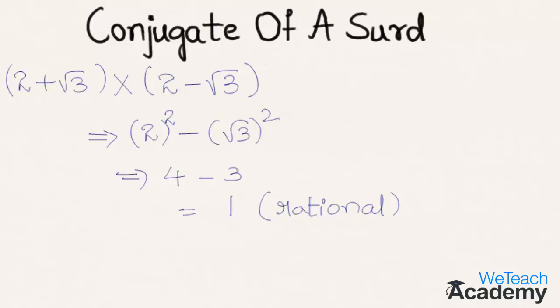Now let us consider the product of two more mixed surds: a plus root b into a minus root b. If the product of two mixed surds where a and b are rational numbers is a rational number, then a plus root b and a minus root b are called conjugate surds. We can say that both the surds are conjugate surds.